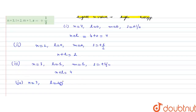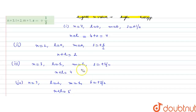For option D: n=3, l=2, m=1, s=+1/2. The n plus l value is 3 plus 2, which equals 5. This means the n plus l value is highest for this orbital at 5, so its energy would be the highest.